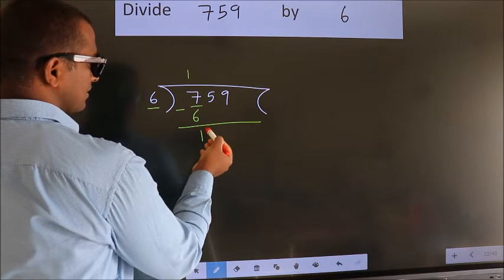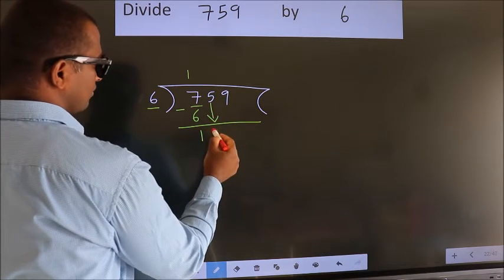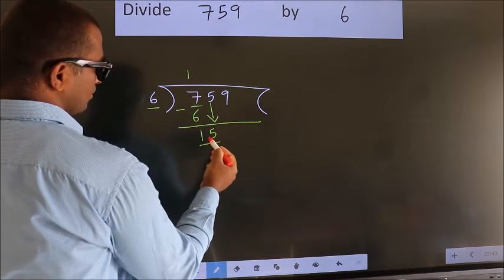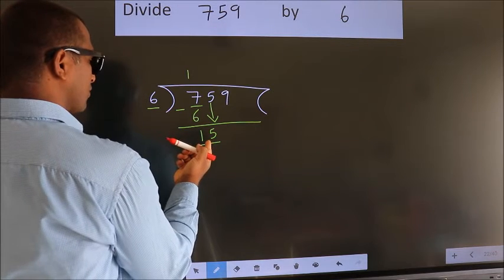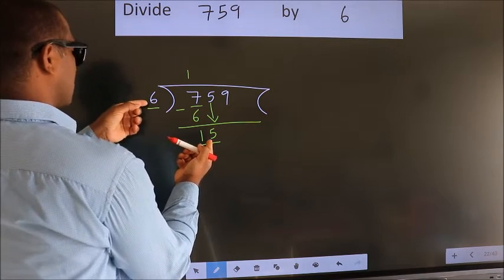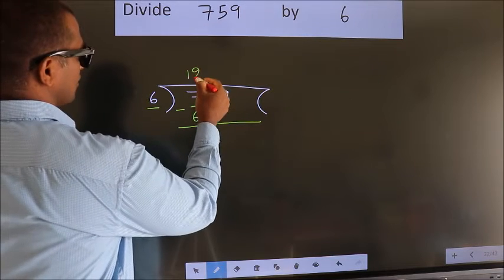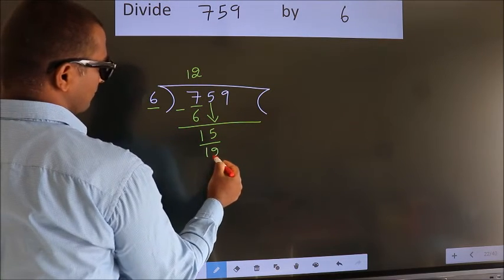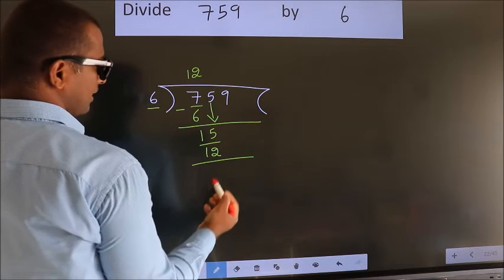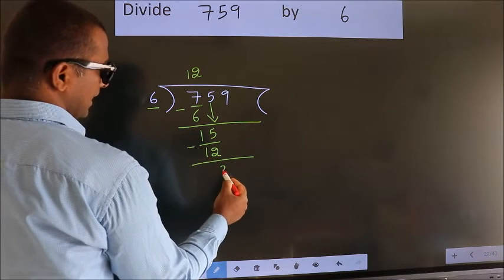After this, bring down the beside number. So 5 down. So 15. A number close to 15 in 6 table is 6 twos, 12. Now we subtract. We get 3.